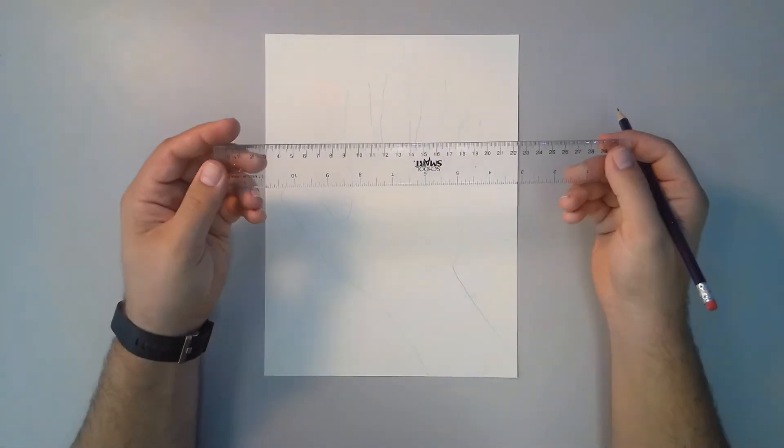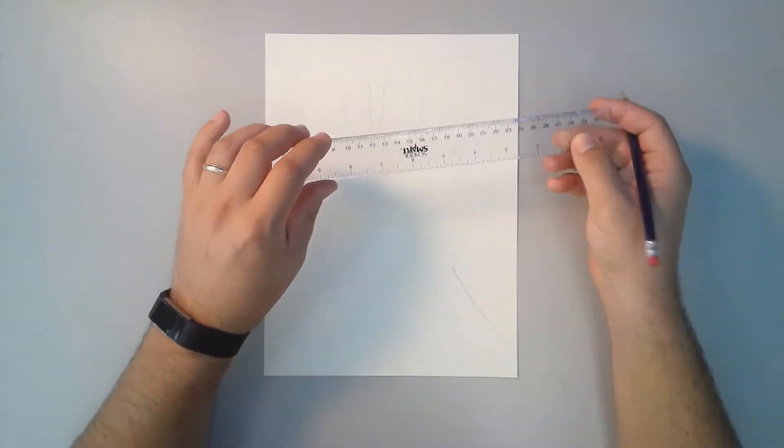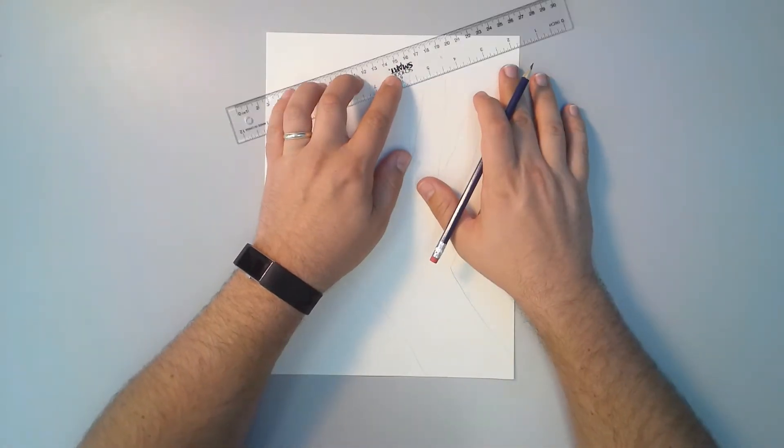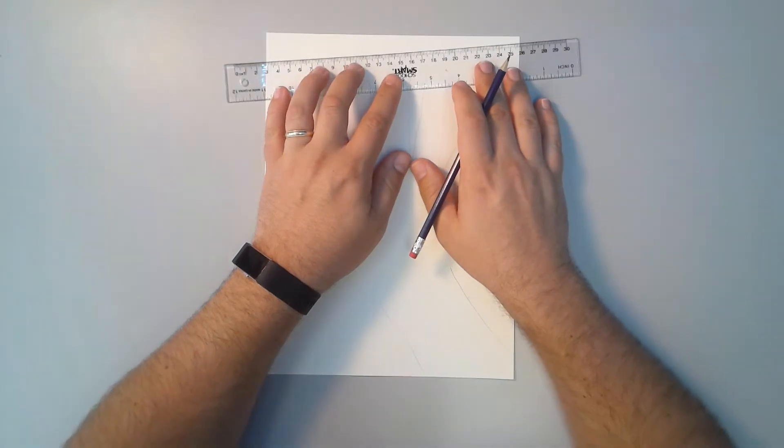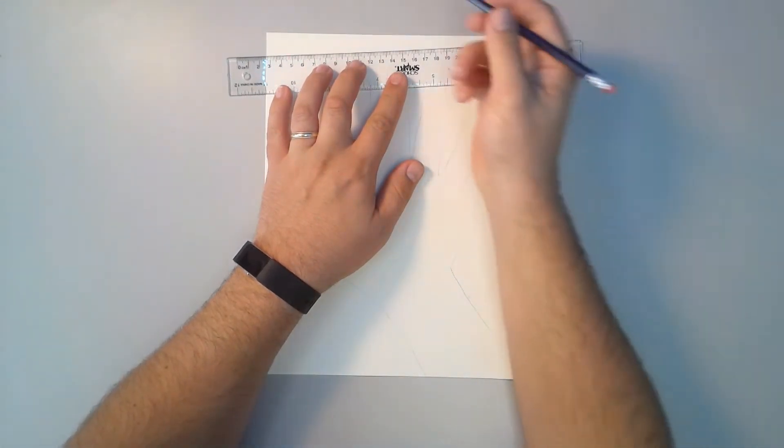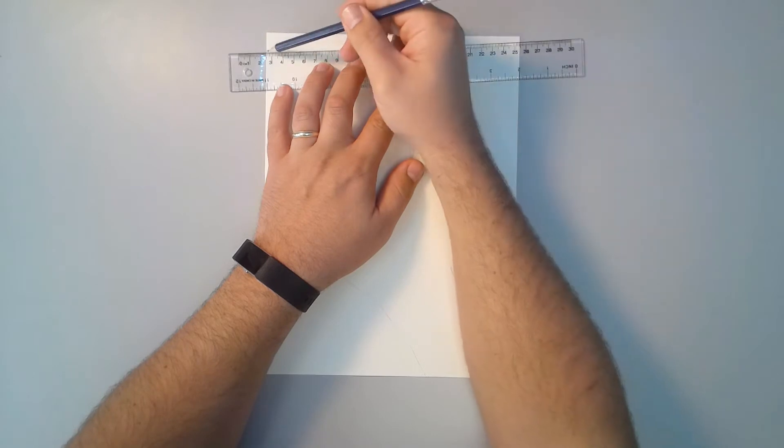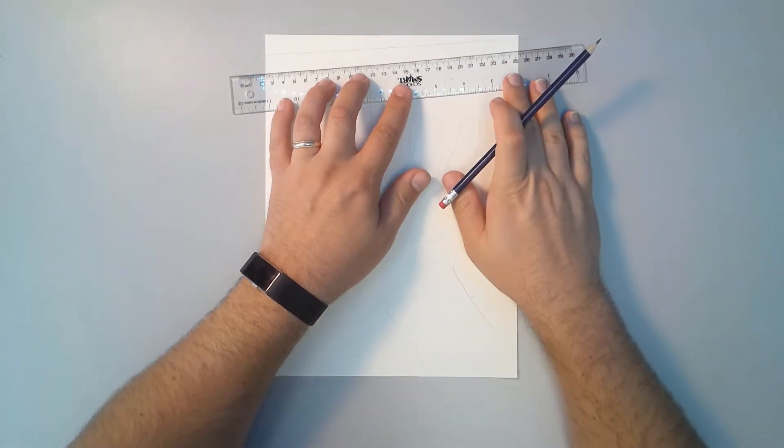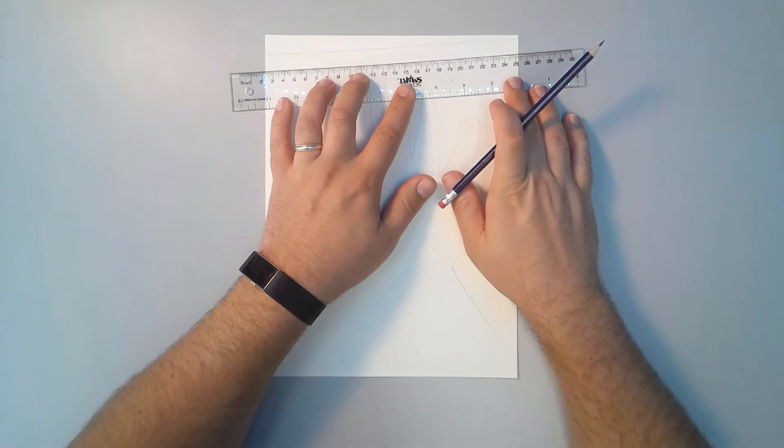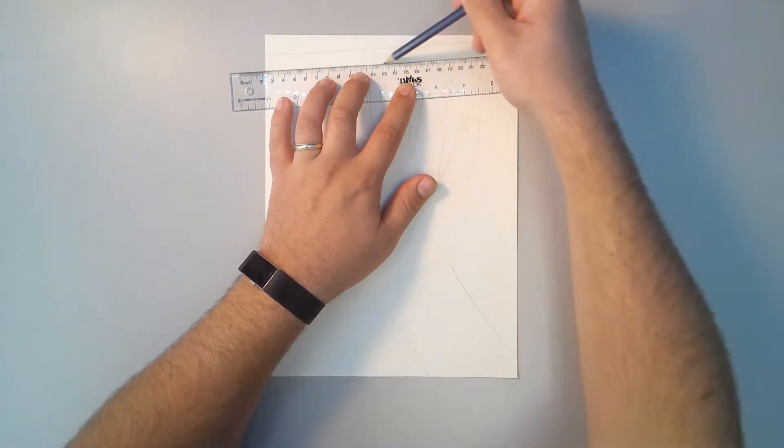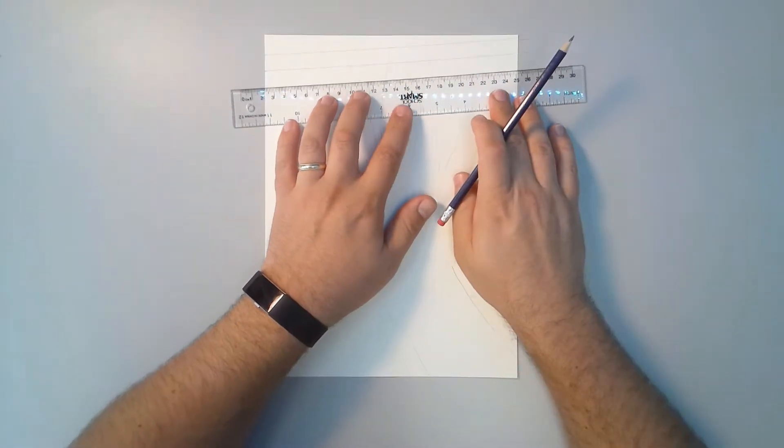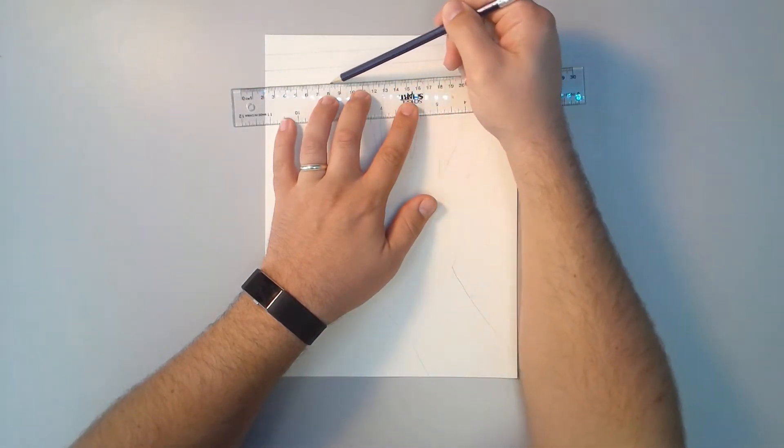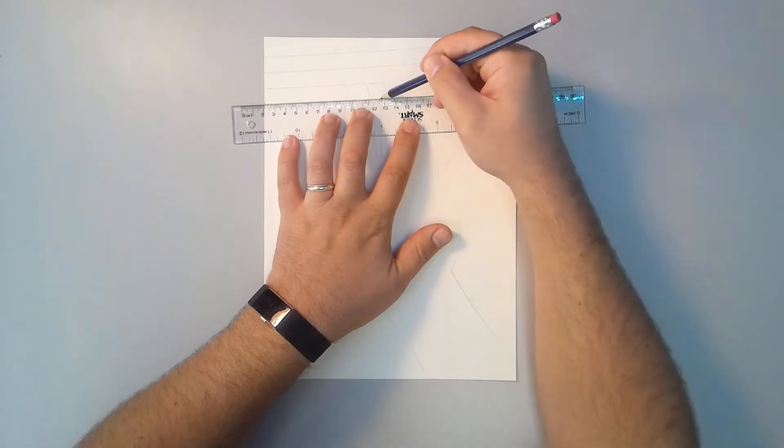We're going to use our ruler to draw straight lines across our paper, but you can choose to make it either diagonal or horizontal or vertical. It's up to you how you trace your lines. I'm going to go at a slight slant because it adds a little bit more energy to the picture.